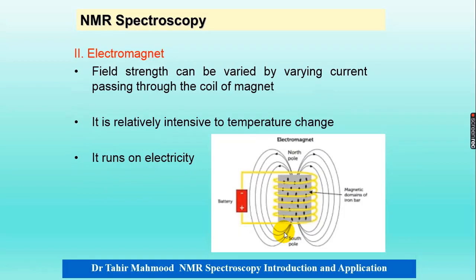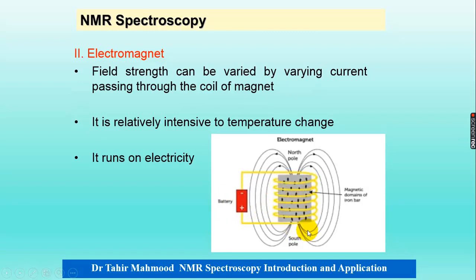The second type is the electromagnet. In an electromagnet, the field strength can be varied by changing the current passing through the coil of the magnet. A current is applied through a battery, and the sample is placed inside the coil. It is relatively sensitive to temperature change and runs on electricity.